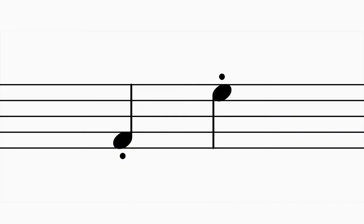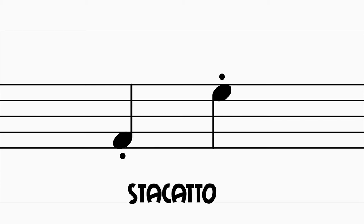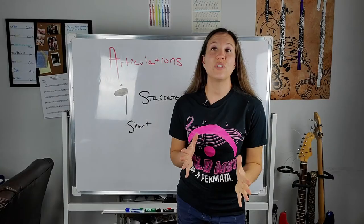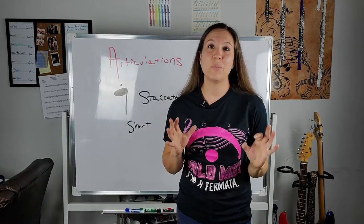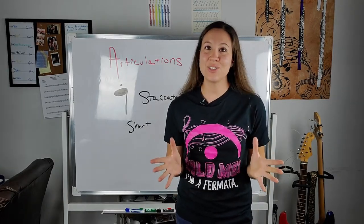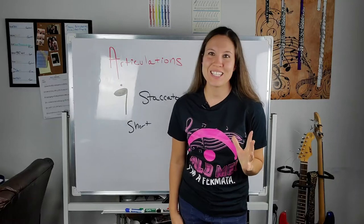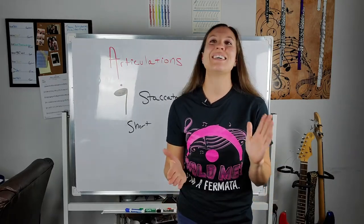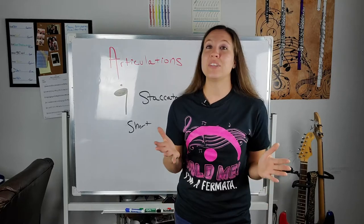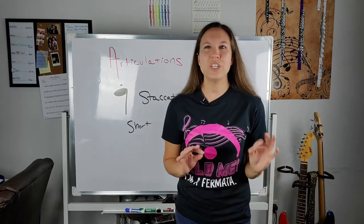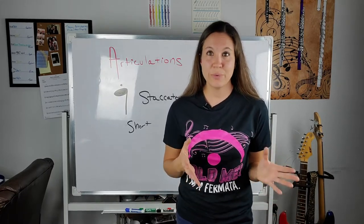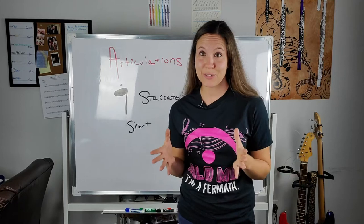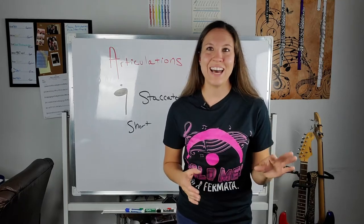So this dot, either above or below the note depending on where your note is on the staff, is a staccato. Staccato means short. For example, when we have the quarter note, that is usually worth one beat. So if we ta the quarter note, it's ta. Now when we have a staccato on the quarter note, we just shorten it. So now when we ta the staccatoed quarter note, it sounds like this: ta.